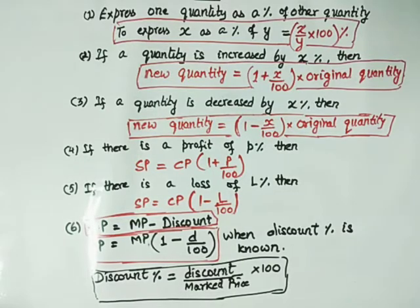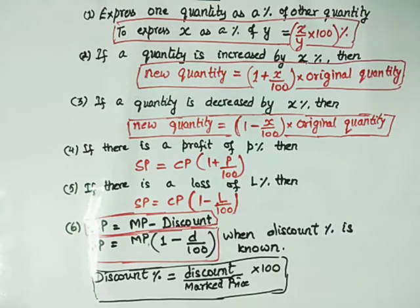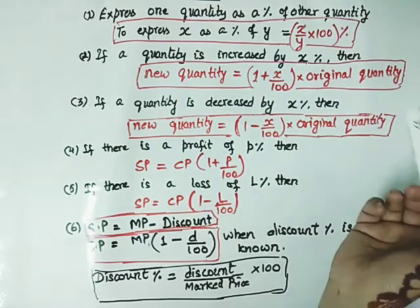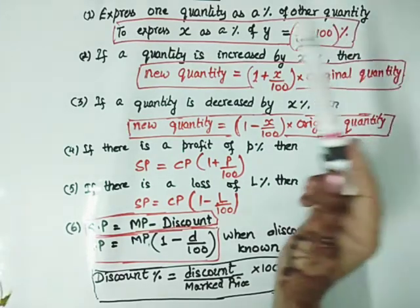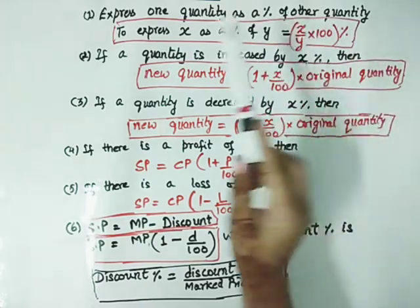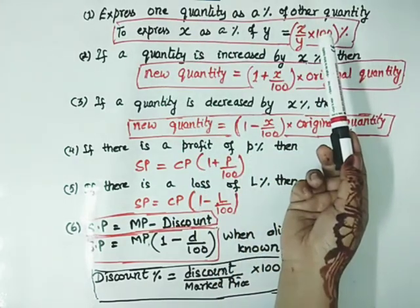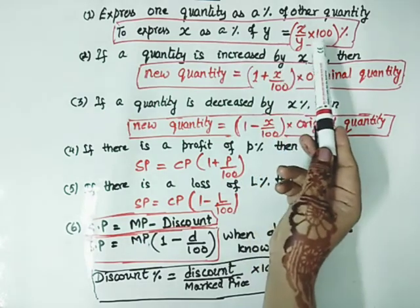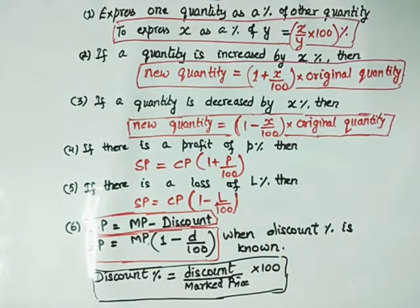Hello students, let us come to another exercise of Chapter 8 — this is Exercise 8.2. Before going to the exercise, let me relate you with some formulas which are going to be very helpful for solving this exercise. The first formula: suppose we have to express one quantity as a percentage of another quantity — to express x as a percentage of y, we write x upon y into 100.